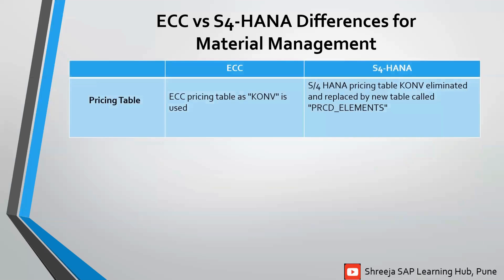Next one: pricing table. In ECC, the pricing table KONV is used. Whereas in S4HANA, the pricing table KONV has been eliminated and replaced by the new table called PRCD_ELEMENTS.